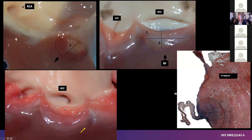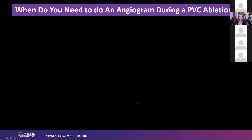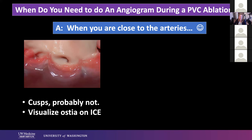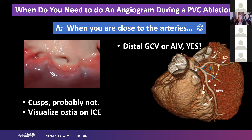I often get asked: when do you do an angiogram during a PVC ablation? My obvious answer is when you're close to the arteries. From that anatomical description, I don't feel like we're generally very close to the coronary arteries when in the cusps. If you go back and look at coronary angiograms you shot as a fellow with reflux into the cusps, there's usually greater than a centimeter of distance. So I don't routinely do that. I visualize the left coronary ostium on ICE before ablating and making sure I'm lower.